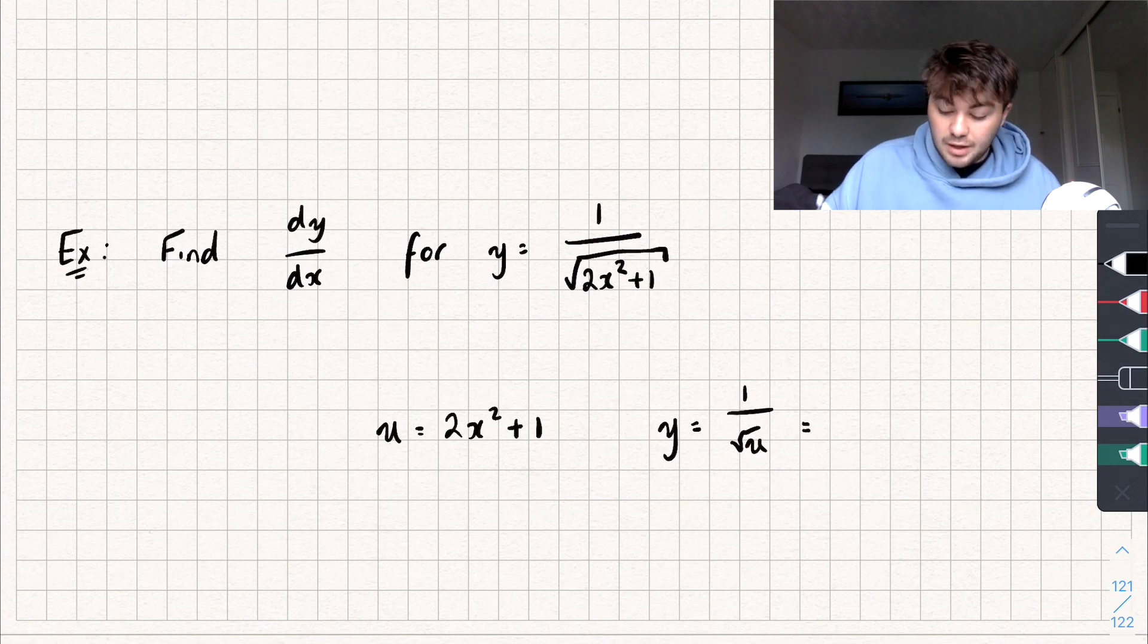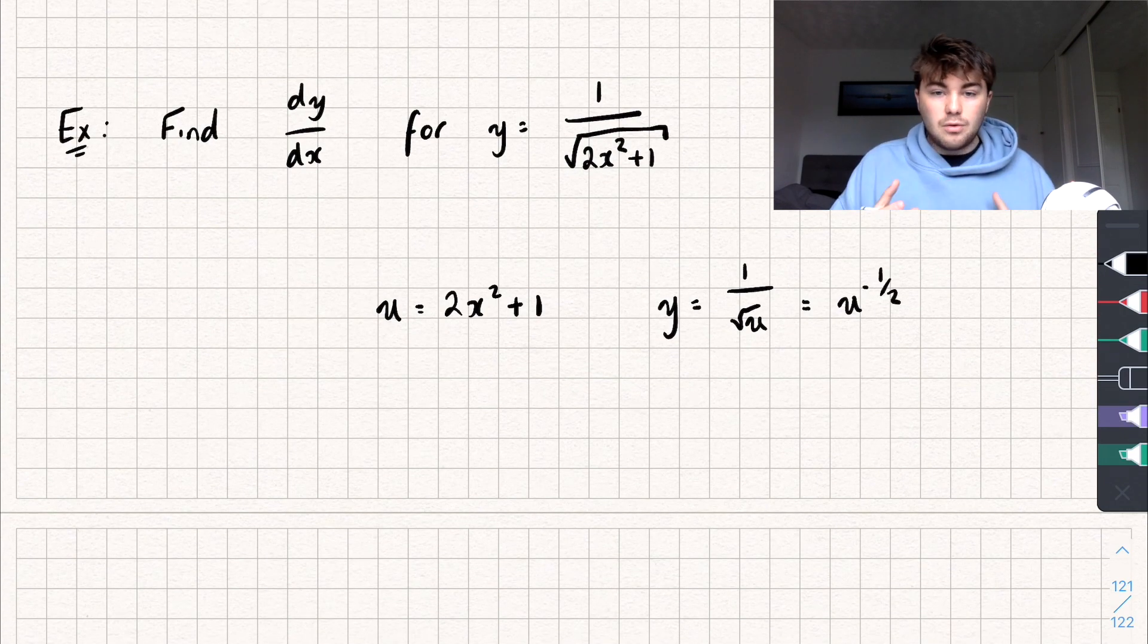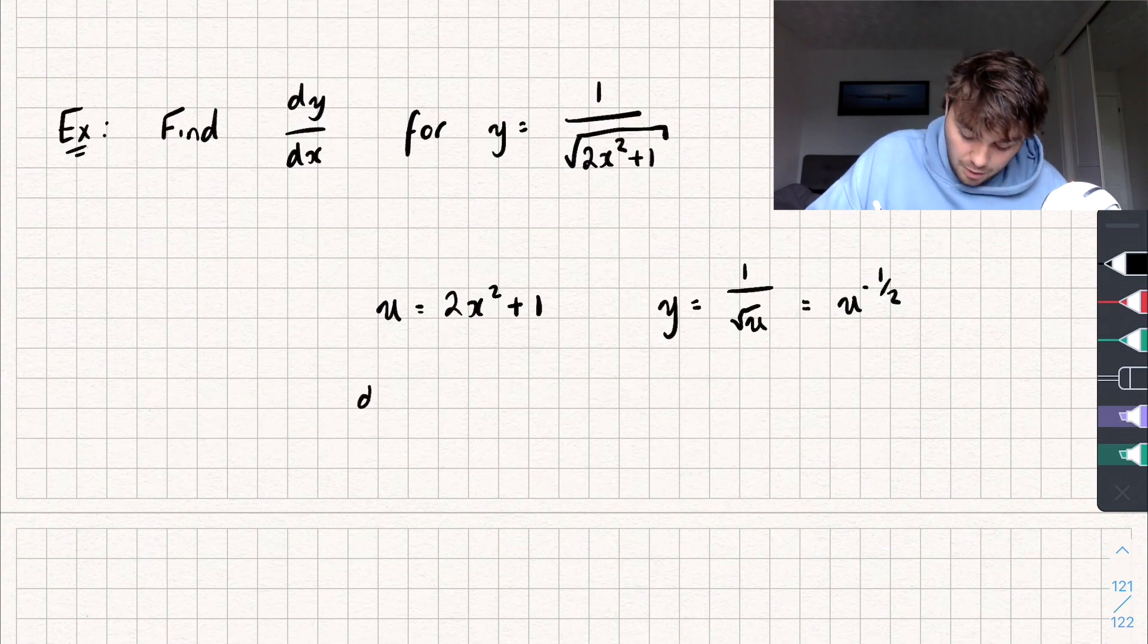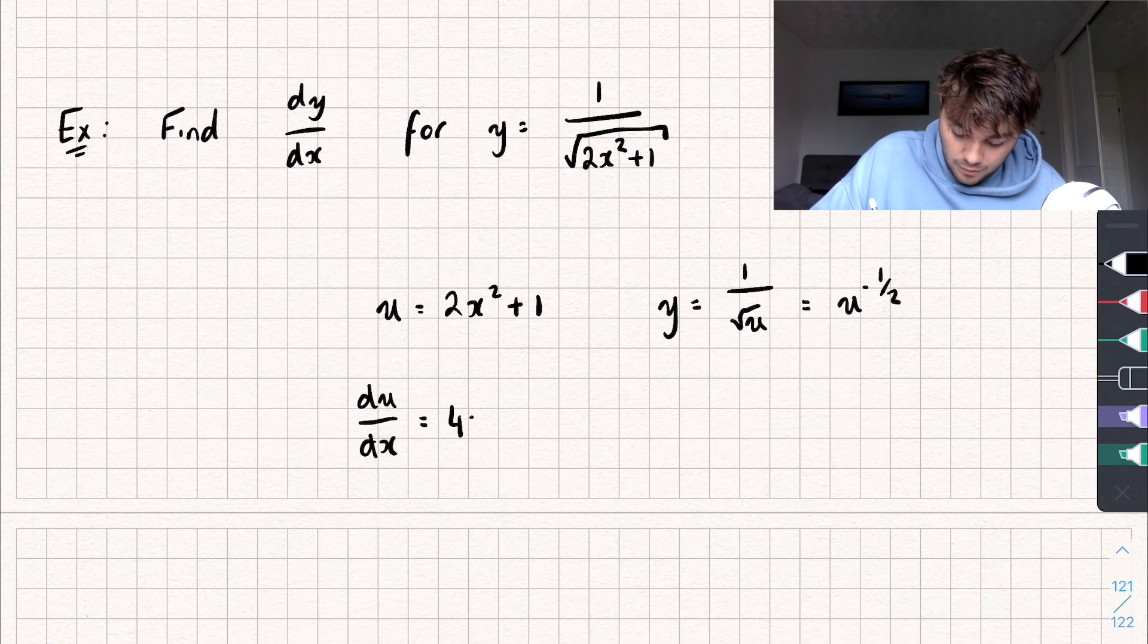And we can actually rewrite this as u to the power of a negative half, because that makes it even easier to differentiate. So, let's calculate the derivative of u with respect to x, and then the derivative of y with respect to u. So, we're going to get that du by dx. Well, that's going to equal just 4x.